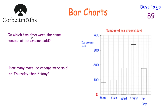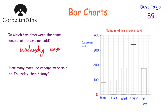Our first question asks: on which two days were the same number of ice creams sold? We're looking for two bars with the same height. As you can see, Wednesday and Friday have the same height — both reaching 100, 120, 140, 160, 180. So 180 ice creams were sold on Wednesday and 180 on Friday. The answer is Wednesday and Friday.